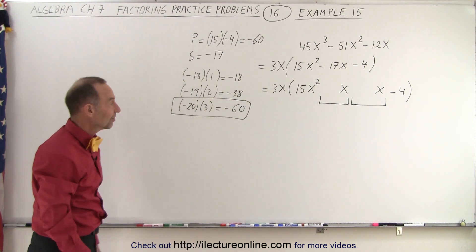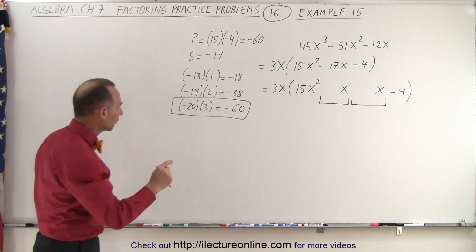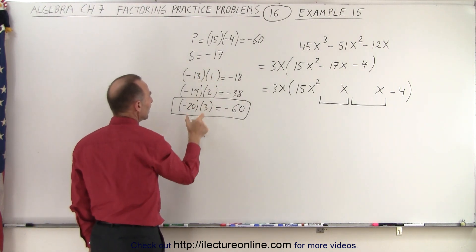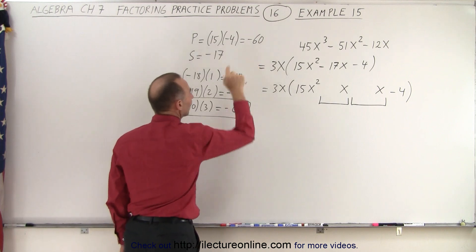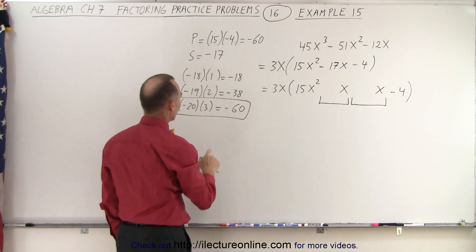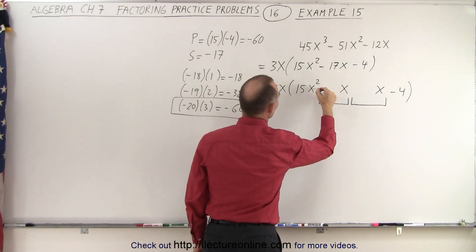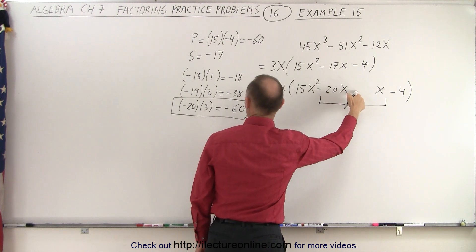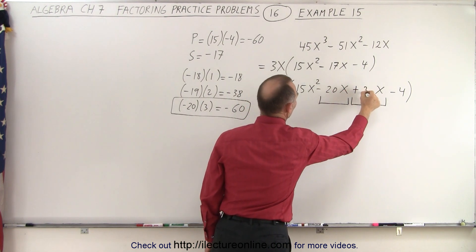So that is the combination that will work. I was looking for two numbers: when I add them together I get negative 17, and when I multiply I get negative 60. So I'm going to put minus 20x here and plus 3x over here.